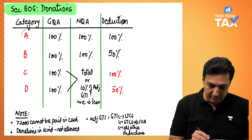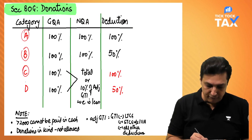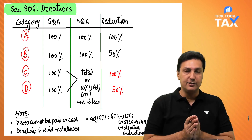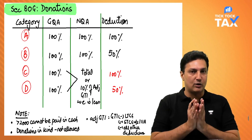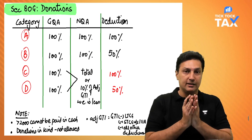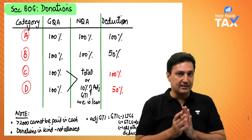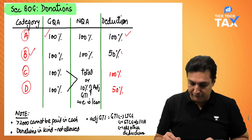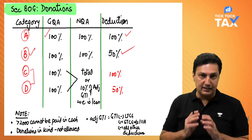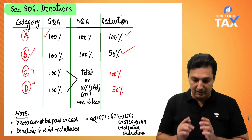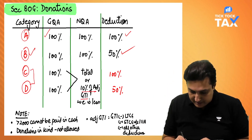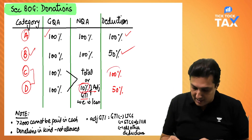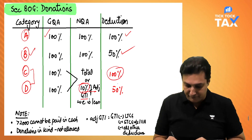A brief overview: 80G is divided into four categories. Some institutes and funds are approved by the government — if you donate to them, you get a deduction from your GTI. A-list donations get 100% deduction, B-list gets 50%. C and D-list have a combined limit of 10% of adjusted GTI. Within that limit, C-list allows 100% and D-list allows 50%.